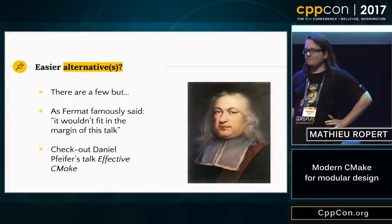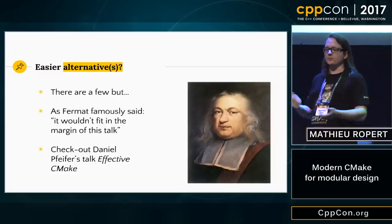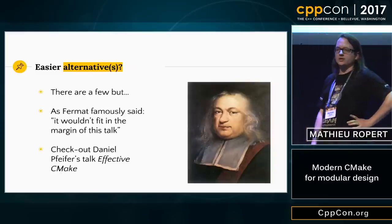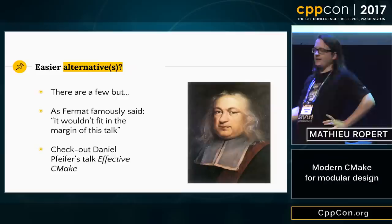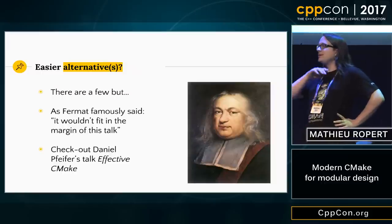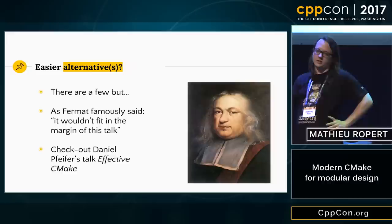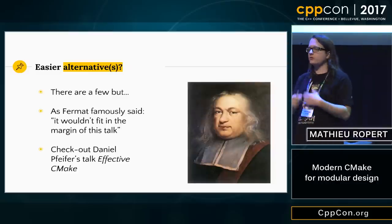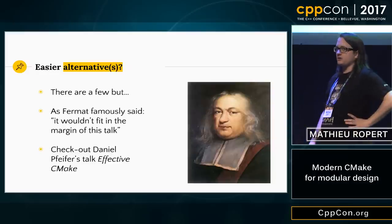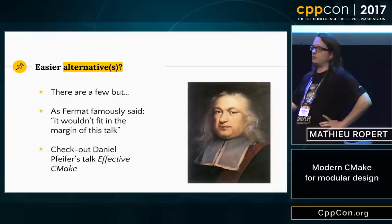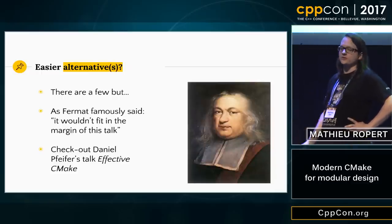Are there easier alternatives? Yes, but as some French famous mathematician said, it doesn't fit on the margin of this talk, so I won't be able to give you all the details. Daniel Pfeiffer did a very nice talk about CMake called Effective CMake at C++ Now, and it explains lots of things — from generating finders to using CMake to set compatibility flags, checking standard support, and so on. I think it was voted the most helpful talk of the whole convention. If you're into CMake or have to use CMake, just go look at it.